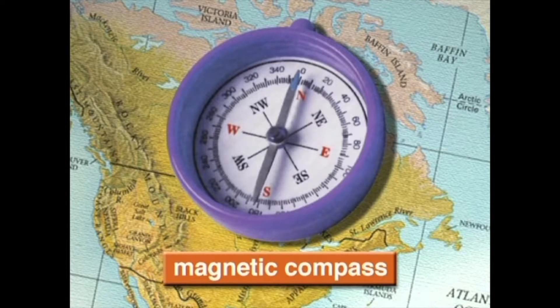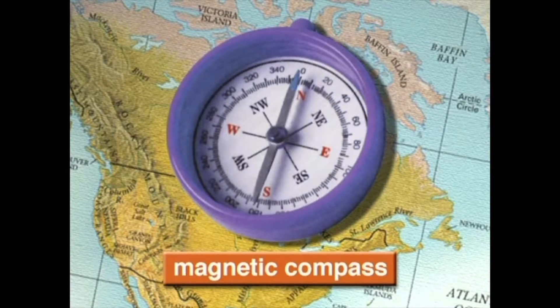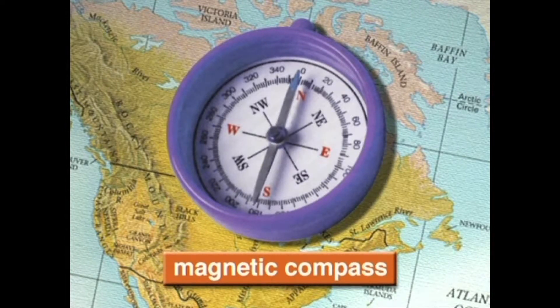Another way to find places is to use directions. A magnetic compass is a simple way of finding the directions of north, south, east, and west. The needle of a compass always points to the magnetic north pole. On a map, north is usually at the top, south is at the bottom, east is to your right, and west is to your left.